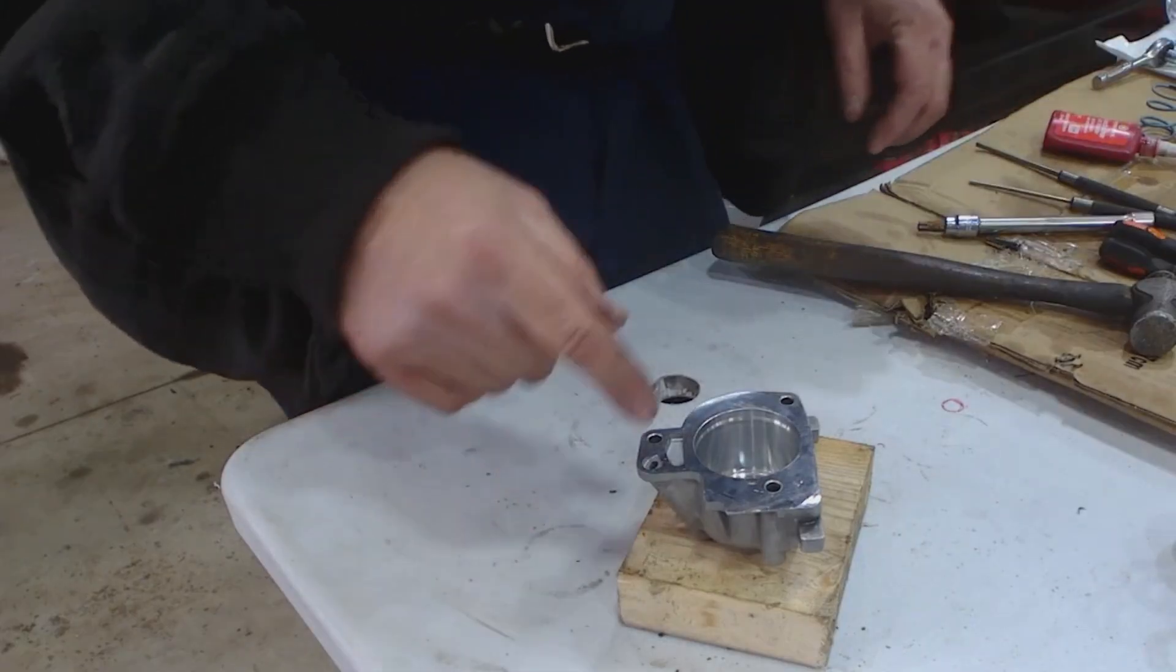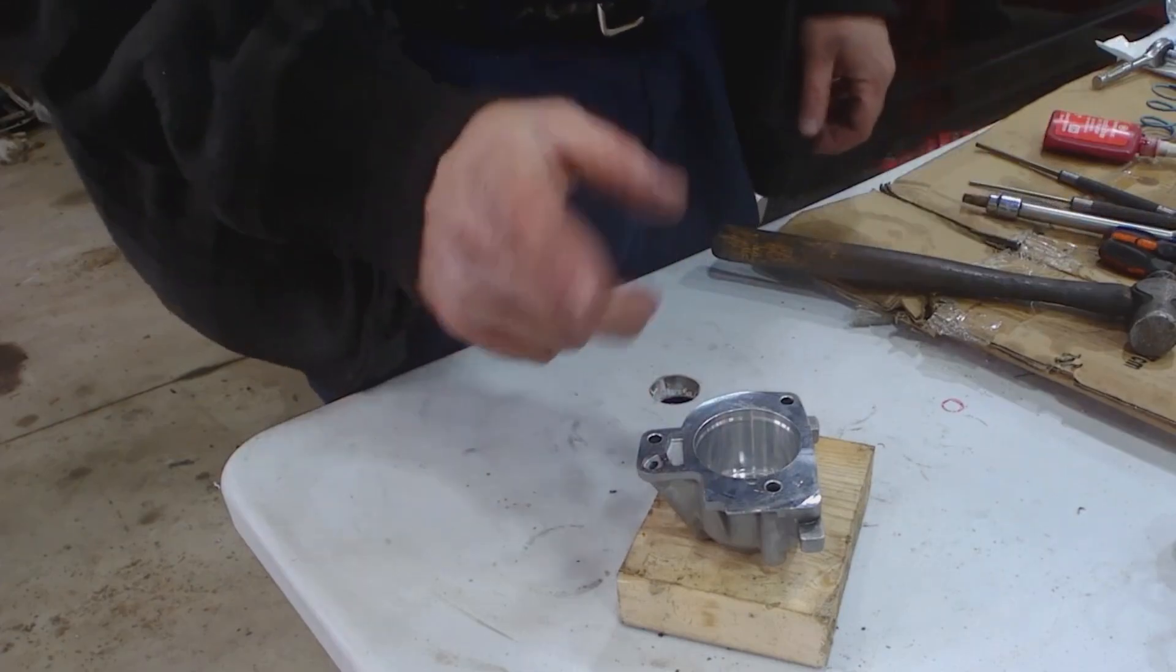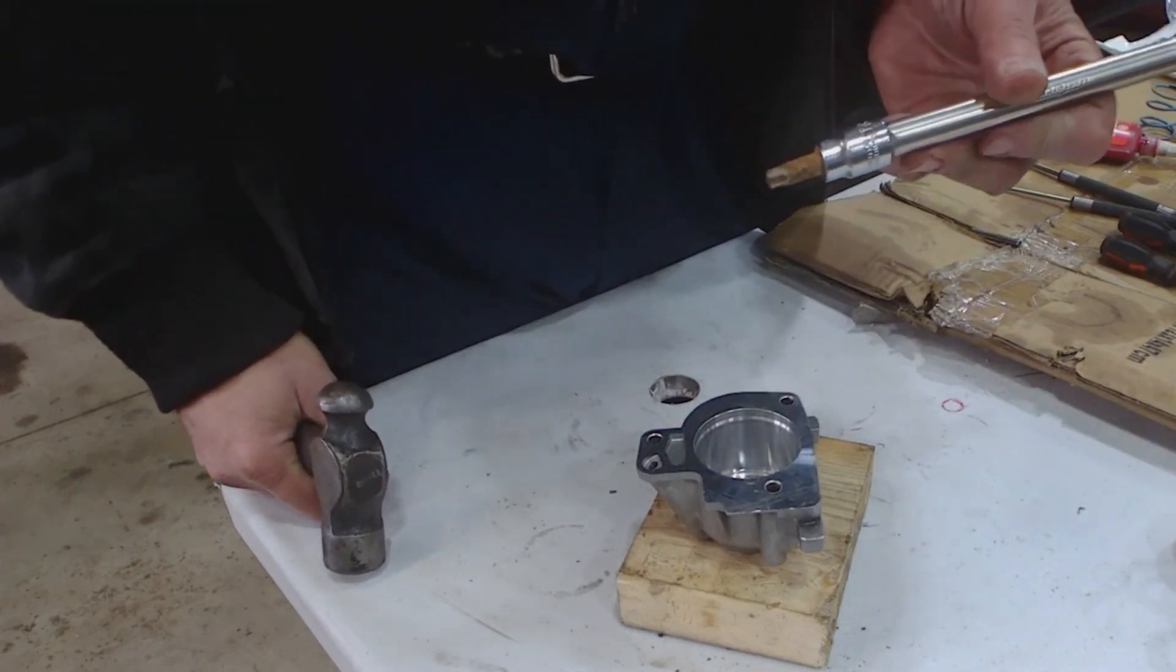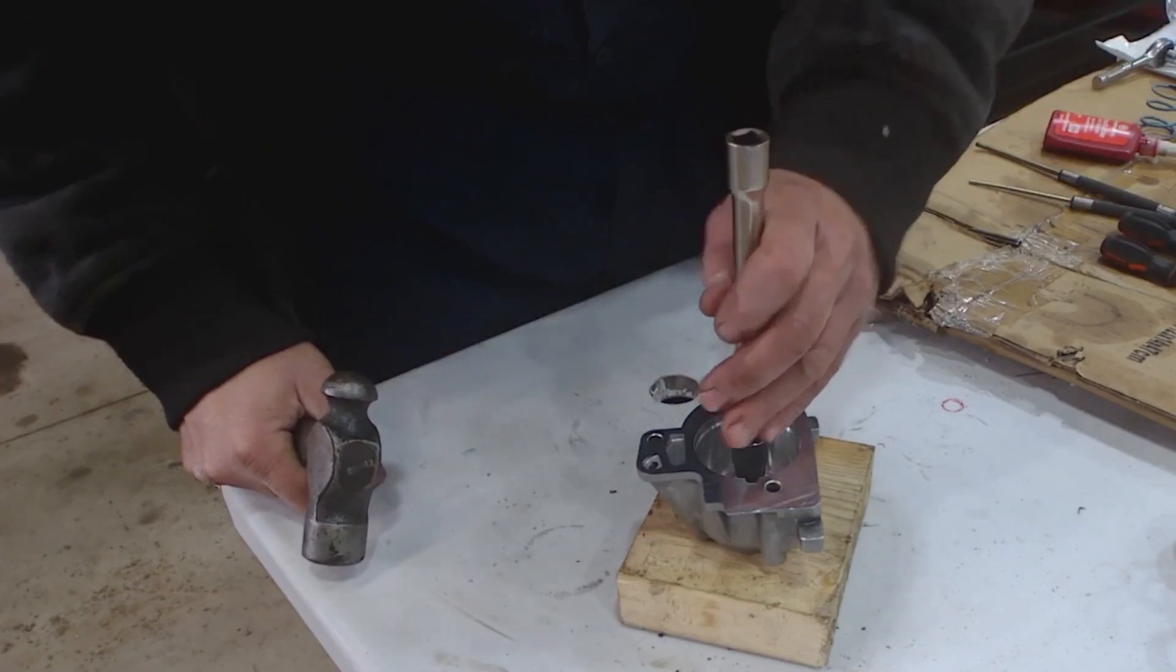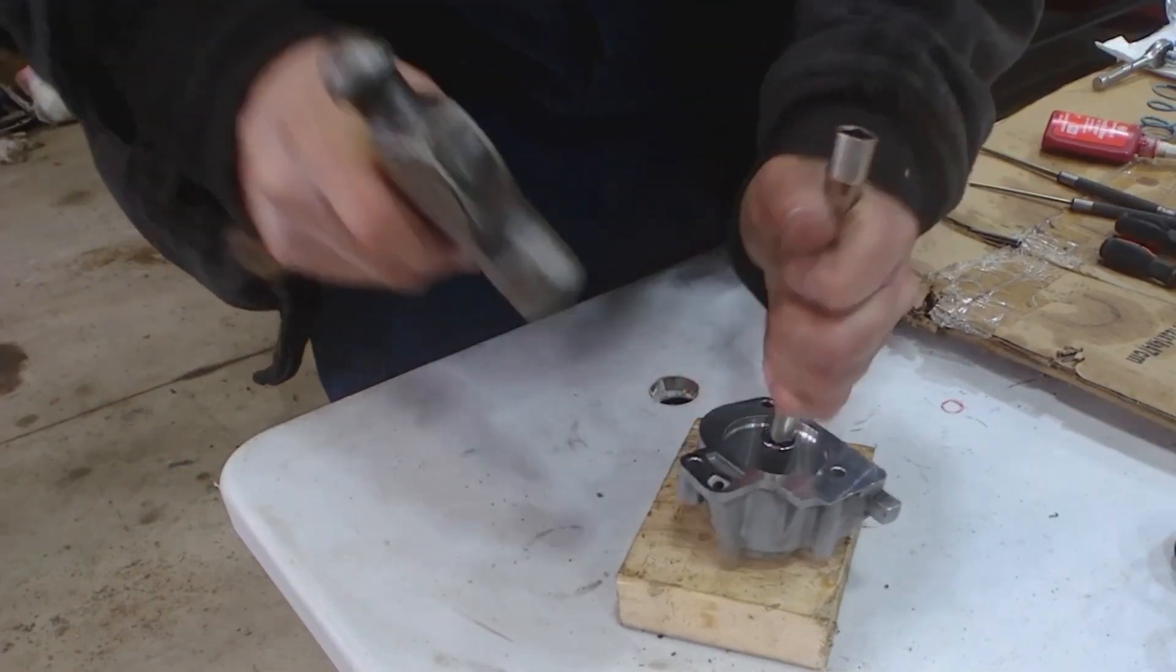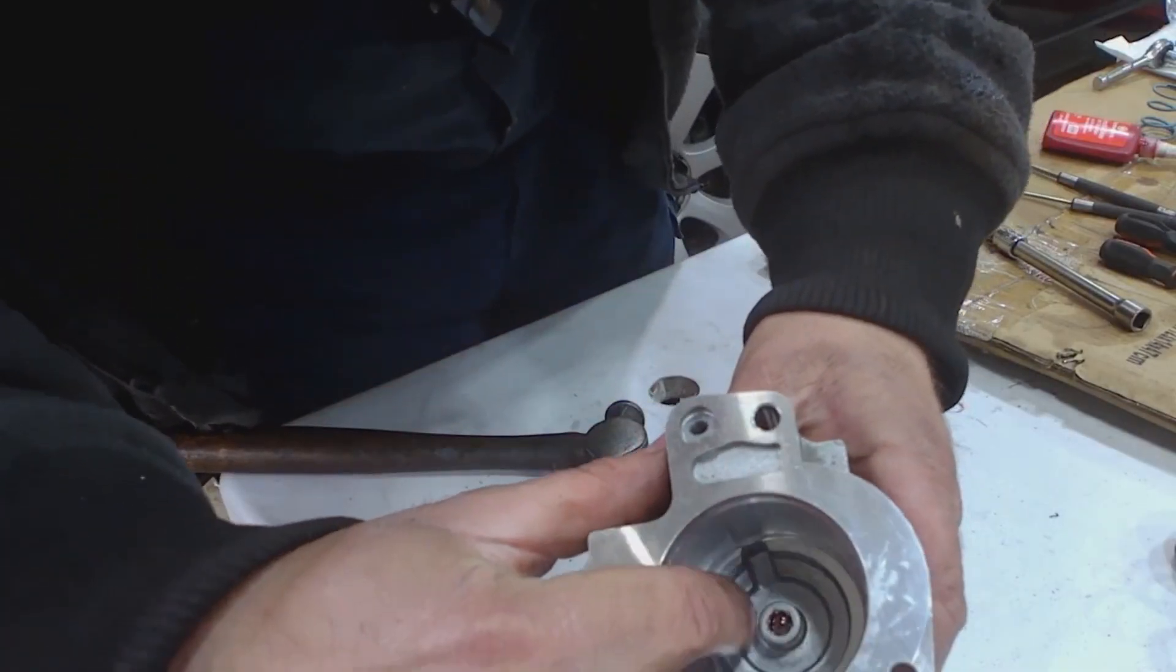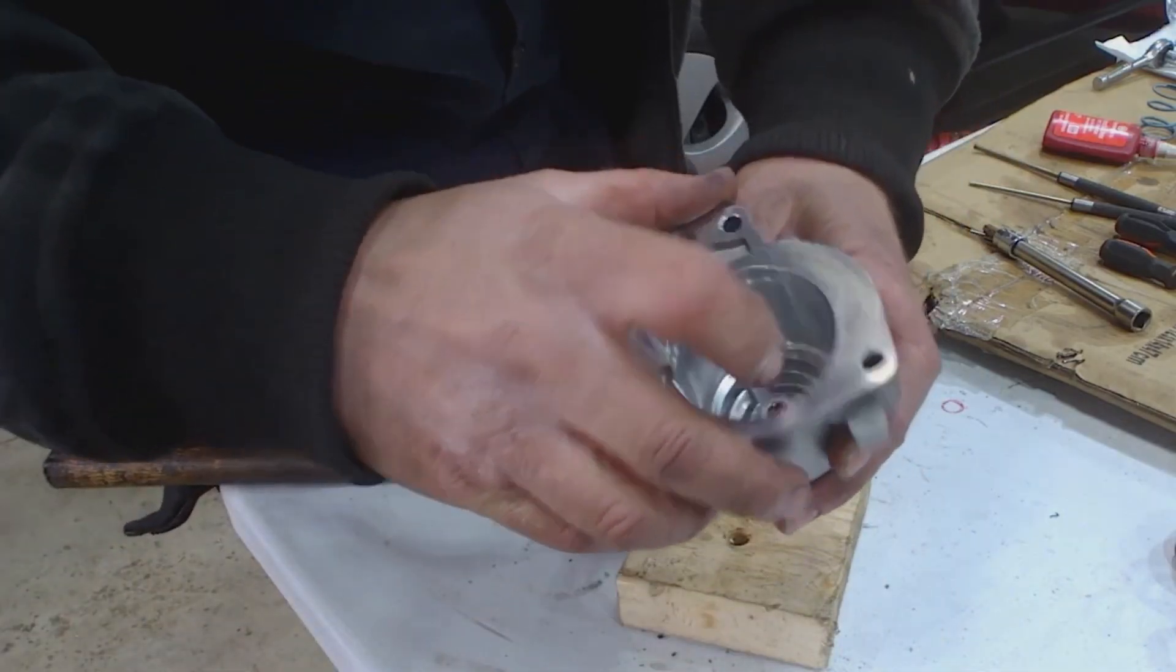And then, whether you use the check ball or the end of the pin, the instructions recommend staking the aluminum to make sure that doesn't come out. The best thing I found for that is a T45 Torx bit. Rust is optional. Well, the Torx bit doesn't quite go in the hole. As you can see, it makes six lovely, evenly spaced little stakes at once. So that pin's not coming back out of there.